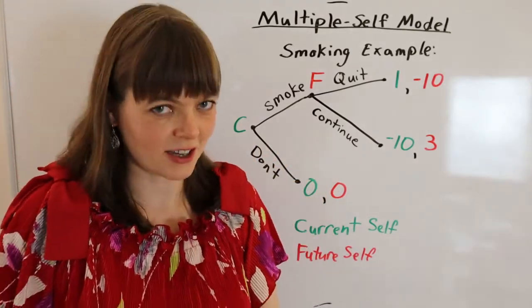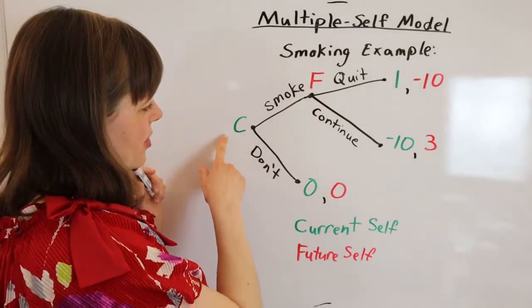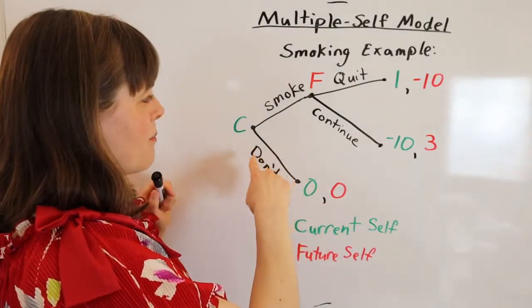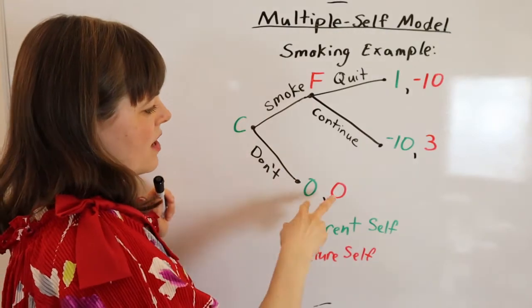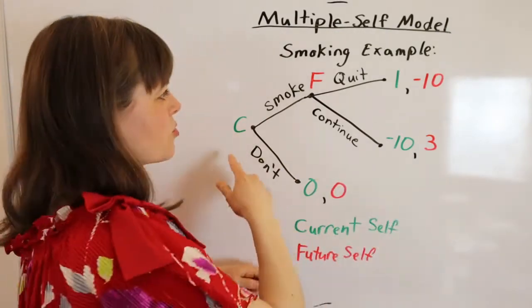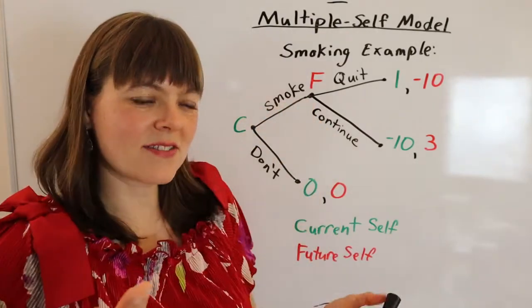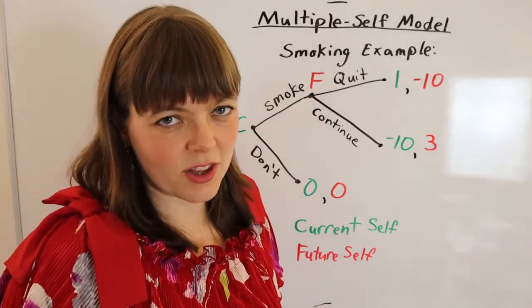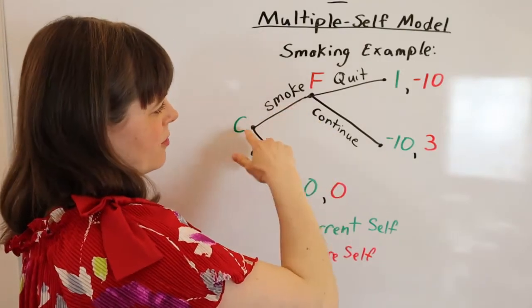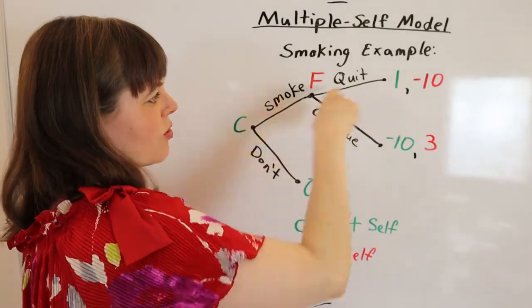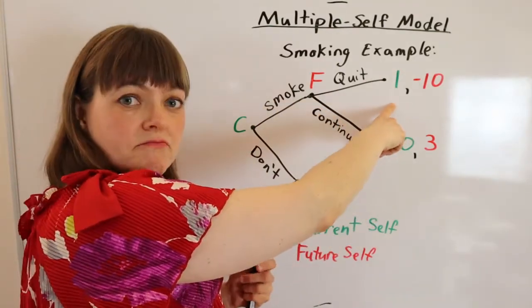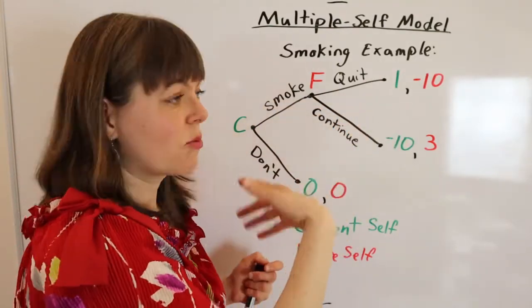Of course, you use backwards induction to do this. Let's think about what the payoffs are in this multiple self model. If you don't try smoking, there's really no gain, no loss. If you try smoking, it would be kind of neat to have tried it just so that you know what the experience is like — in which case the future self gets one util from trying smoking and quitting: a little bit of gain from knowing what it's like without being addicted.